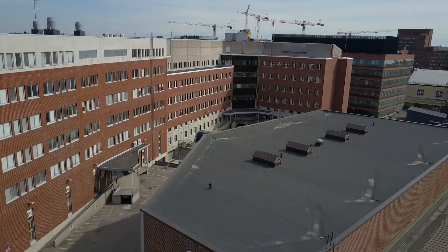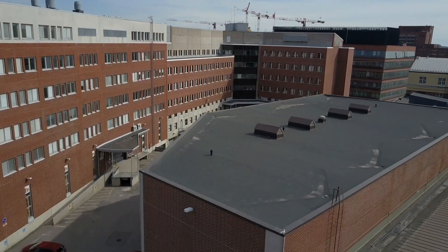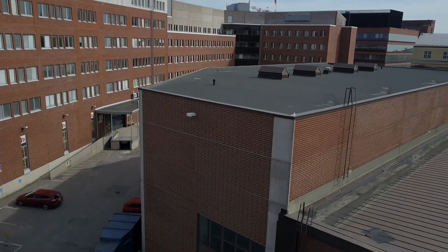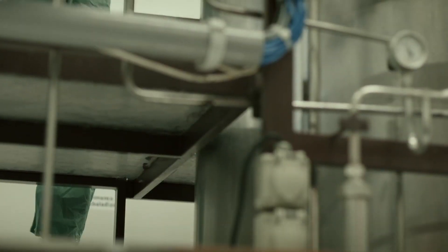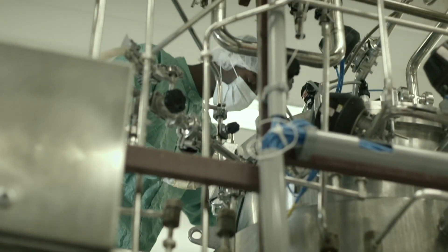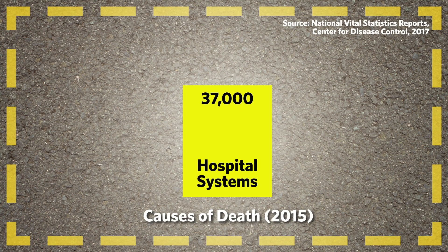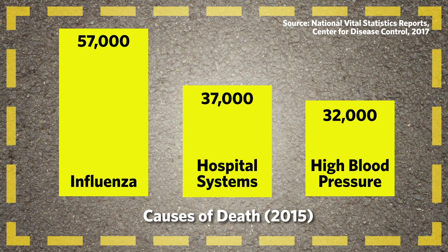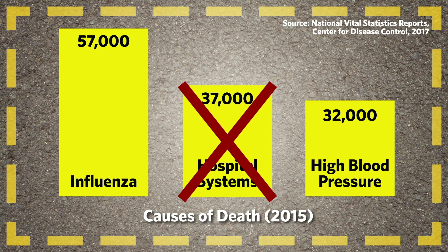What if I told you that 37,000 people die each year in U.S. hospitals due to failures of basic systems, like power outages and oxygen supply malfunctions? That's a lot, and it seems like a terrible waste. To put that number in perspective, it's somewhere between the annual deaths from flu and complications due to high blood pressure. Luckily, this isn't the case.